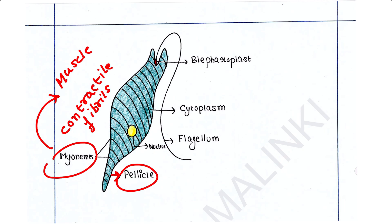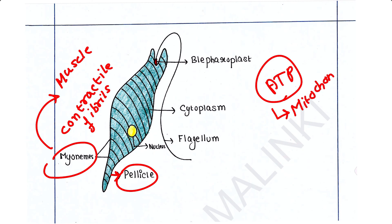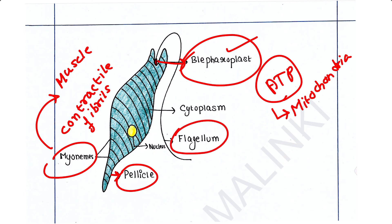For locomotion, Euglena requires energy in the form of ATP. ATP is formed in the mitochondria. In this case, mitochondria are present in the blepharoplast — the organ from which the flagella arises. In the blepharoplast, mitochondria generate ATP and provide energy for Euglena to move.